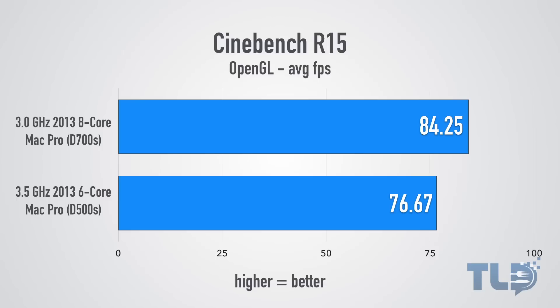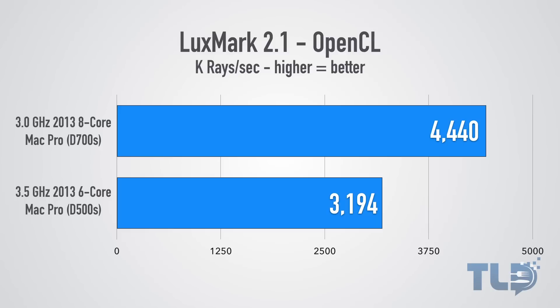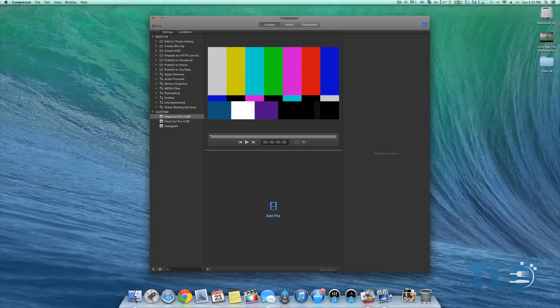In terms of OpenGL, there really wasn't a huge difference. But in Luxmark 2.1, which benchmarks OpenCL performance, there was actually a much bigger difference between the two — a score of 4,440 on the 8-core D700 Mac Pro compared to 3,194 on the 6-core D500 Mac Pro.